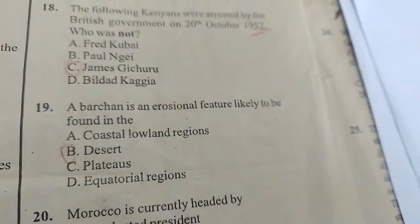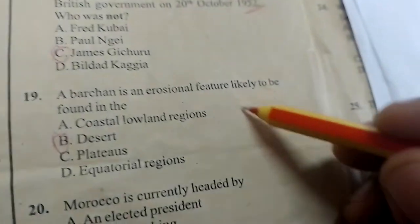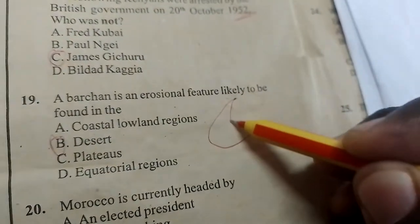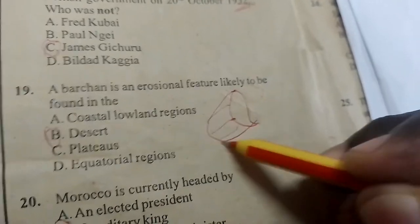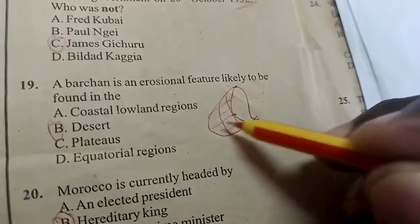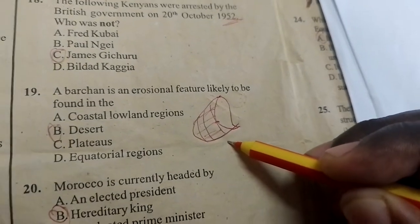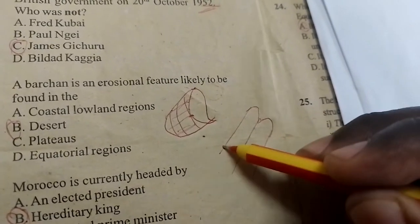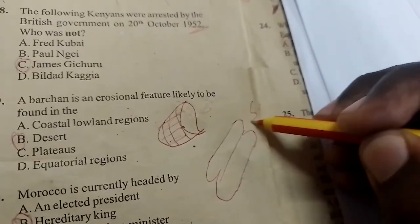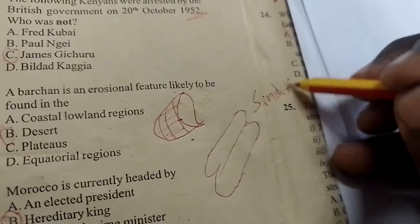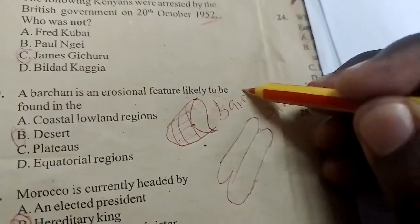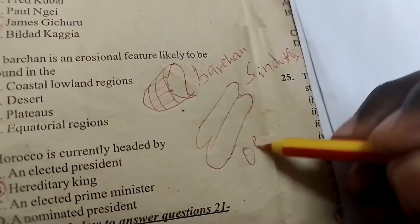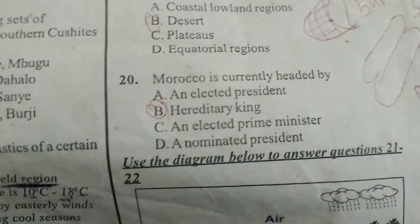Yardang is an erosional feature likely to be found in the desert. A yardang looks like a trolling kind of feature — it is a wind activity that occurs in the desert. Then we have sand dunes. An oasis — remember an oasis is the fertile land in the desert.